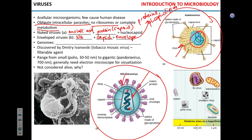In the cell, DNA is the genome. Cells always have double-stranded DNA — no exceptions. Viruses, however, can have DNA as the genome — either single-stranded or double-stranded — and they can also have RNA as the genome, again either single or double-stranded. It's pretty remarkable — they can have all kinds of genomes.